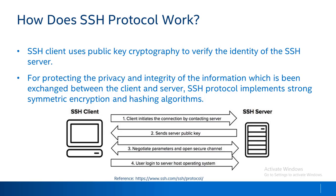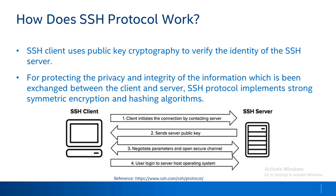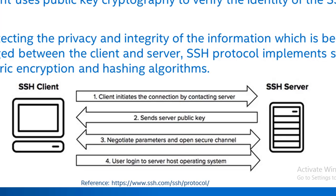Let's understand how SSH protocol works. SSH helps enable a secure connection between client and server. This security is maintained through data encryption and hashing algorithms. Before transmitting data over an SSH connection, the client verifies the specific server using the server's public key. Both client and server negotiate over predefined parameters and finally open a secure channel through which the user can log in to the server host operating system. SSH protocol implements strong symmetric encryption and hashing algorithms to protect the privacy and integrity of exchanged data.